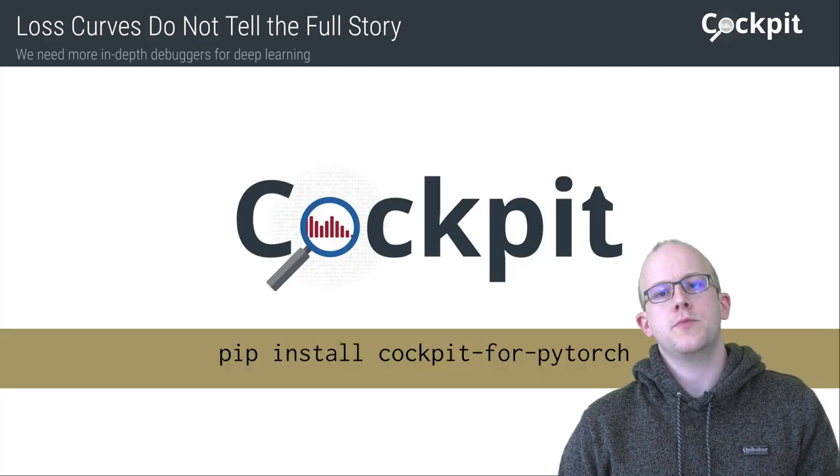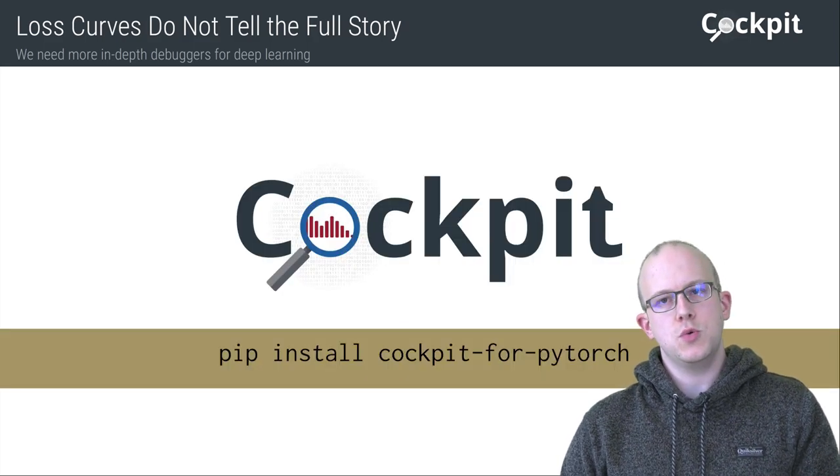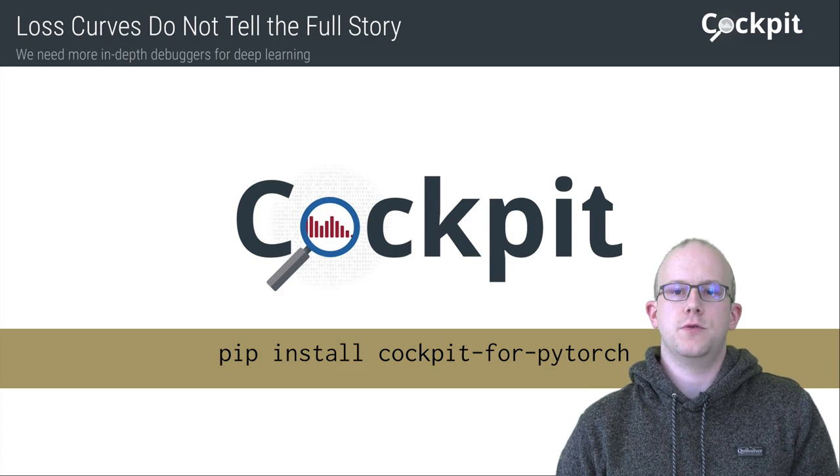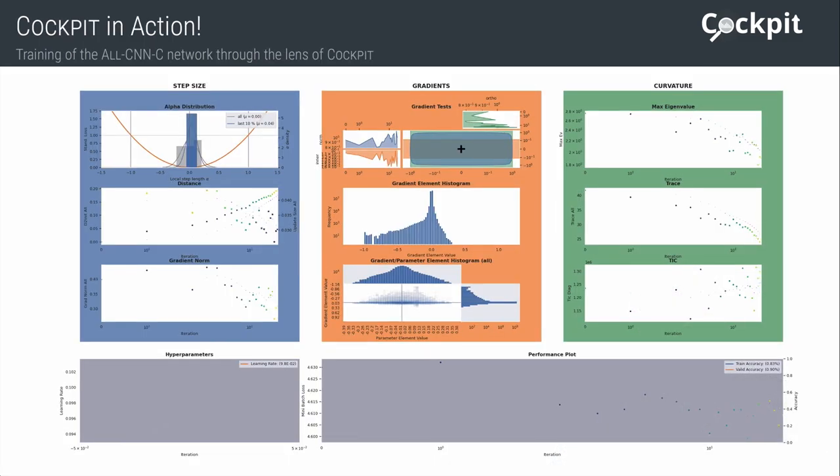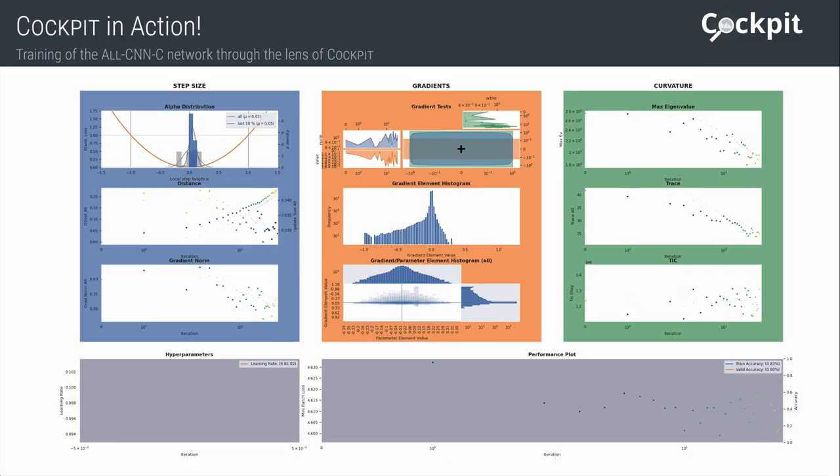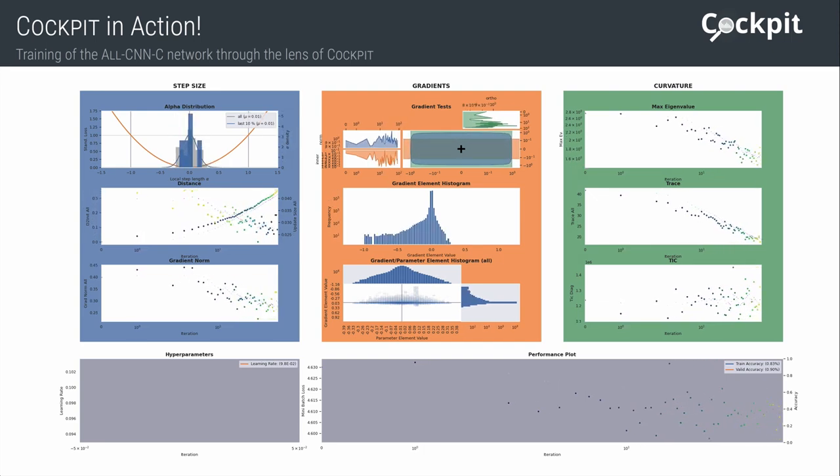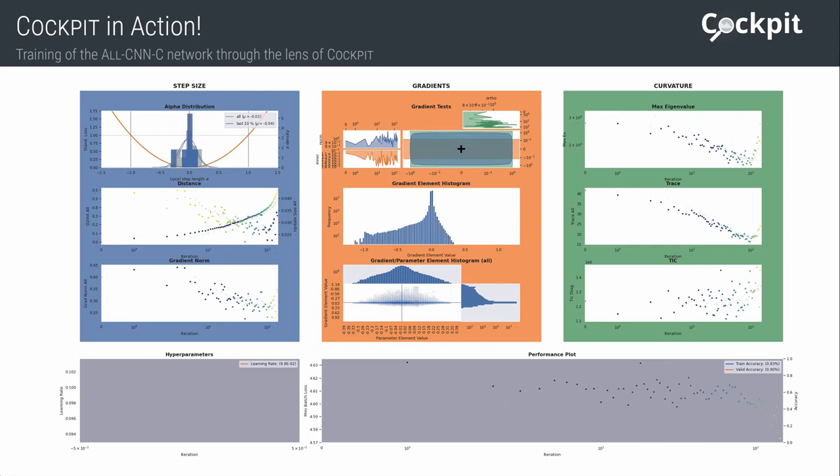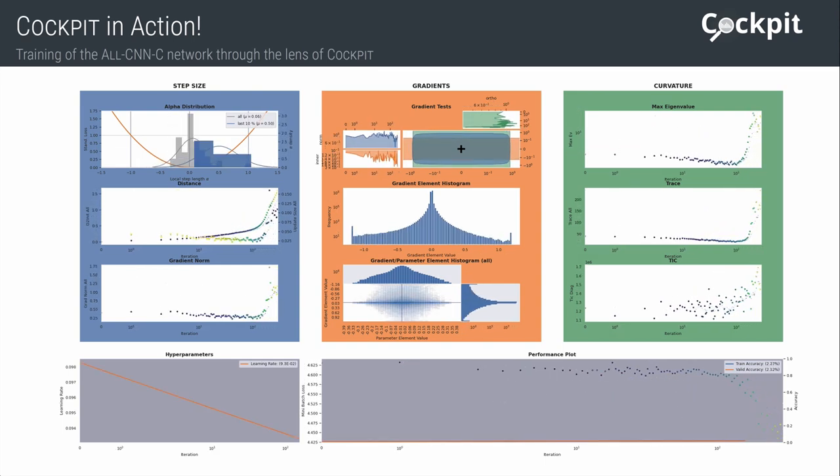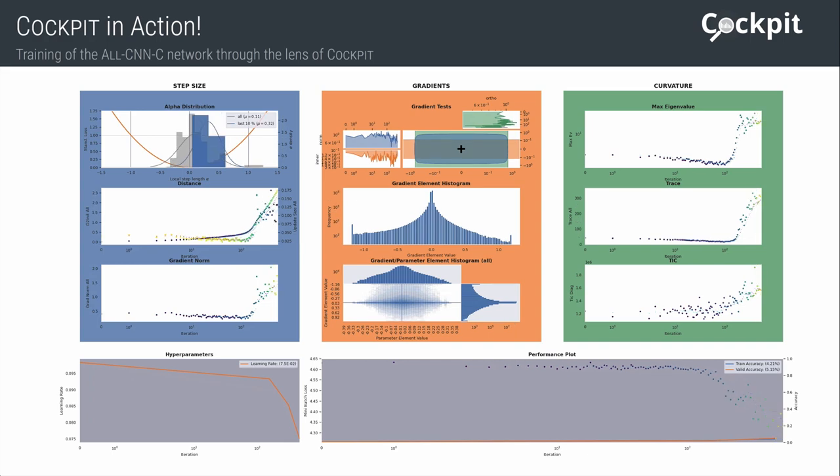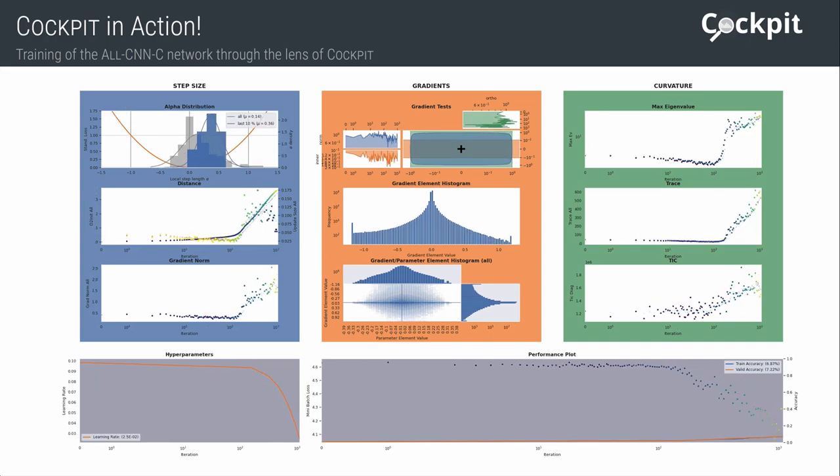As a step forward, we present Cockpit, an easy-to-use and efficient debugger for deep neural networks. It consists of a collection of statistical and geometrical quantities that offer a much richer view of what is going on inside deep networks. And we hope that with this live monitoring tool it will make your neural network training process a little less painful.